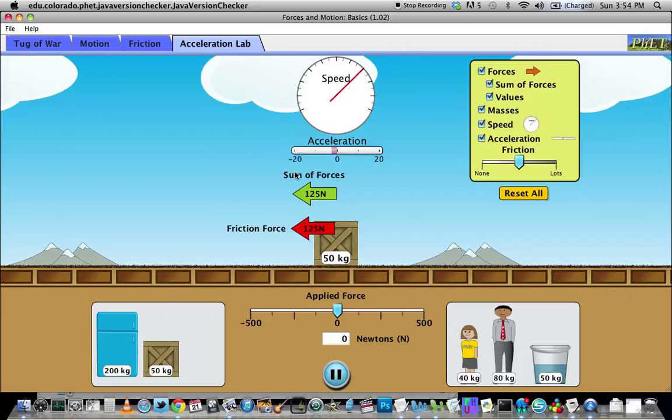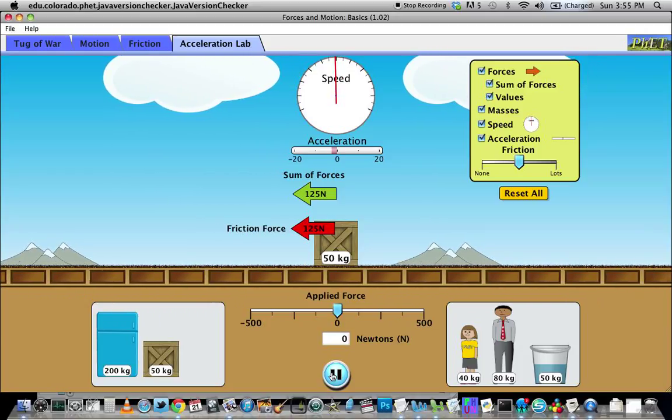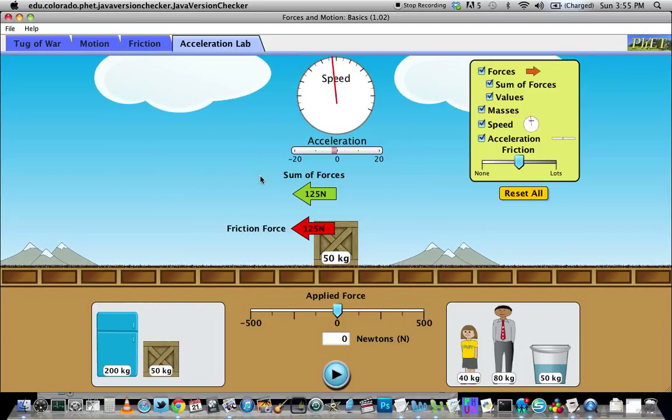We could use this as another value for the sum of forces and the acceleration. I noticed that this says 125 Newtons pointed in the opposite direction. So I would want to record this as a negative value.